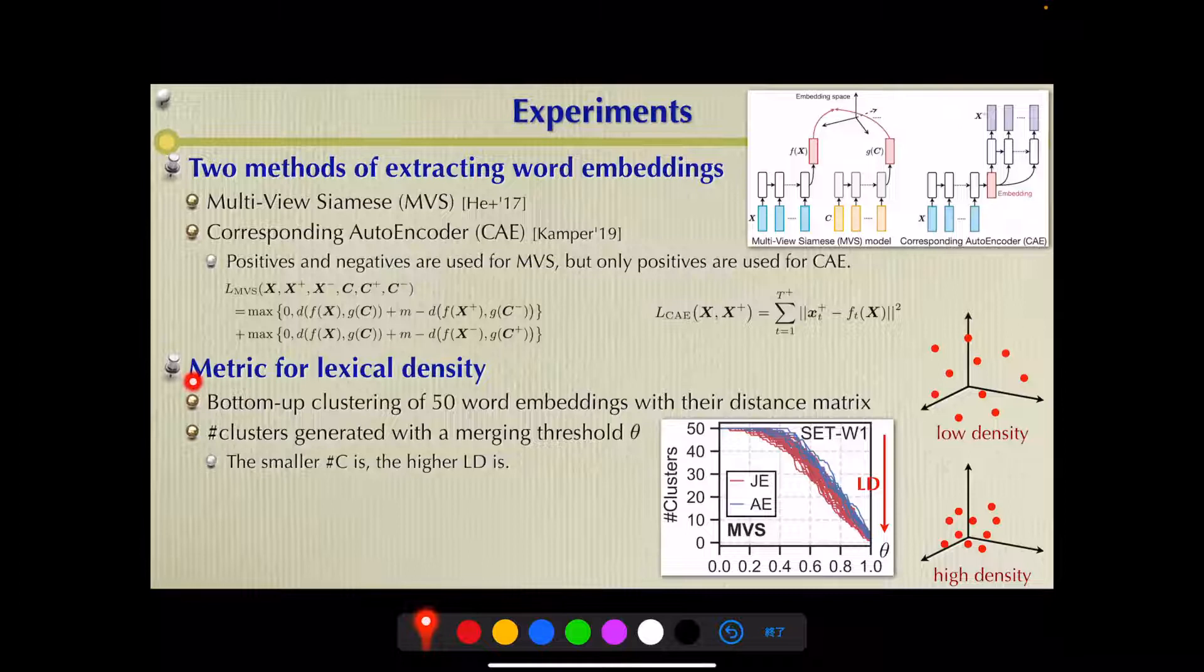As for metric for lexical density, we used the number of clusters generated by bottom-up clustering with a merging threshold theta. This is a typical example of the relation between the number of clusters and the merging threshold. The smaller the number of clusters is, the larger the lexical density is.